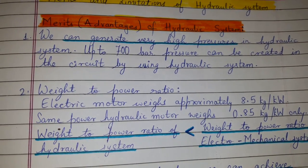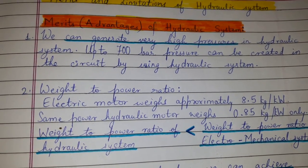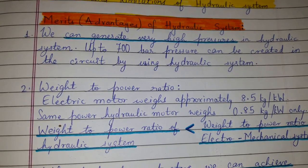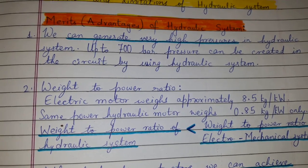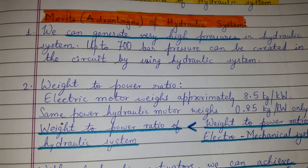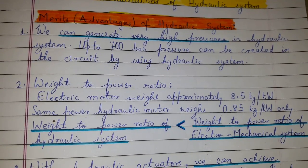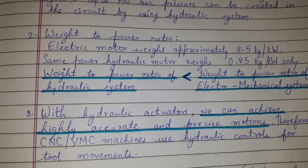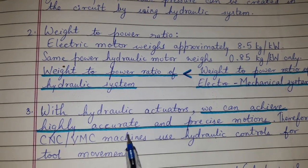For the same power, a hydraulic motor weighs only 0.85 kg per kilowatt. That means the weight-to-power ratio of a hydraulic system is less than that of an electromechanical system.